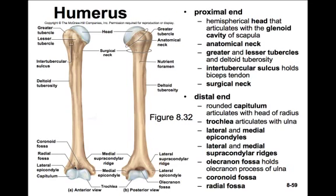Pull out your paper and write down all the features you need to know about the humerus. Your outline should now have everything for the axial skeleton, and we're building the appendicular skeleton — you've got the scapula, the clavicle, and now the humerus.